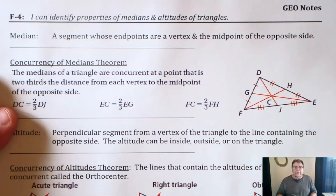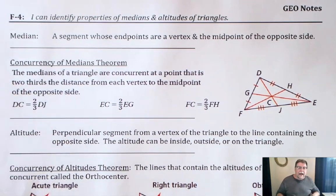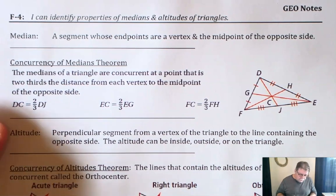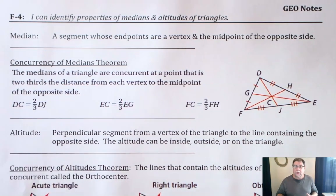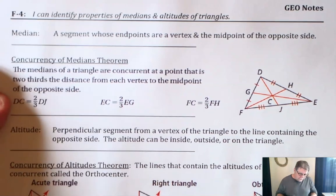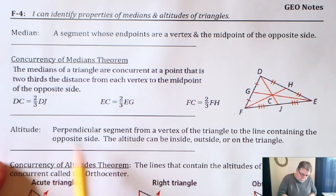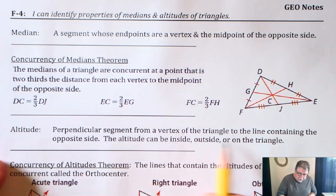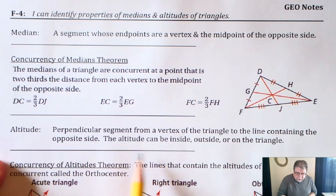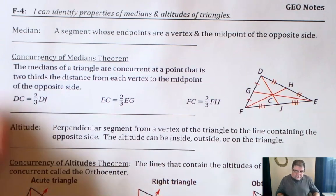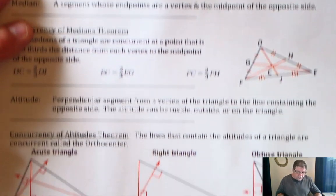The other concept is the altitude. The altitude of a triangle is the perpendicular distance from one side to the vertex of the opposite side — a perpendicular segment from a vertex of the triangle to the line containing the opposite side. The altitude can be inside, outside, or on the triangle.